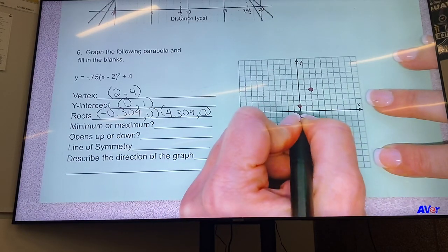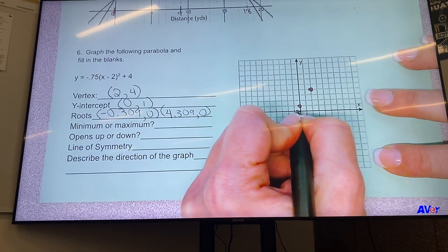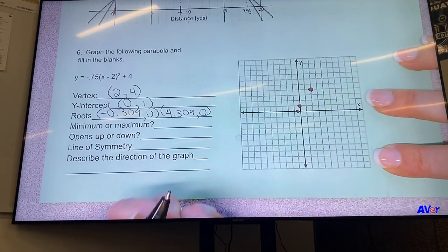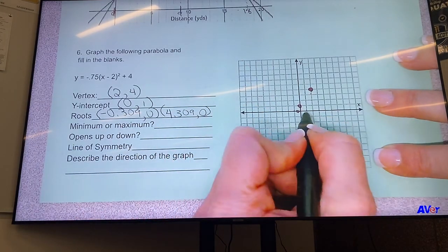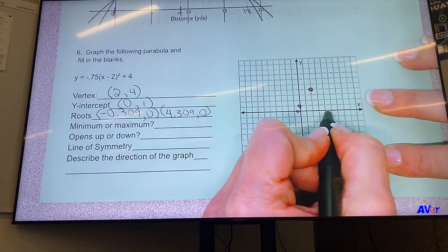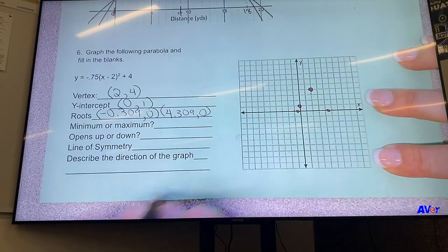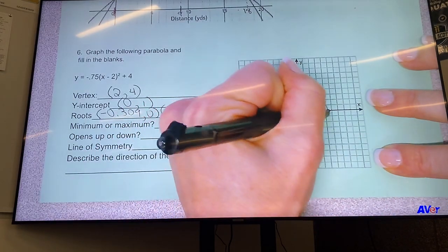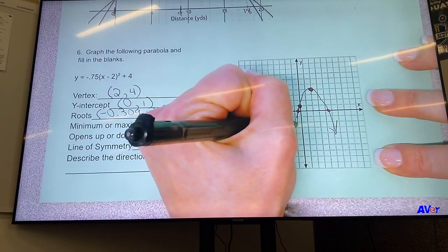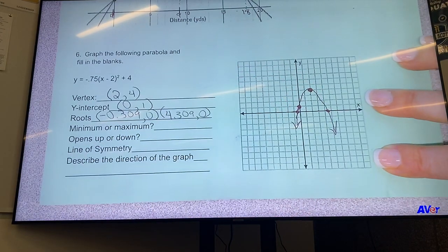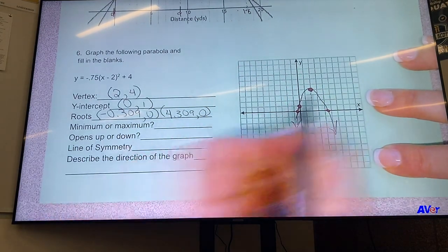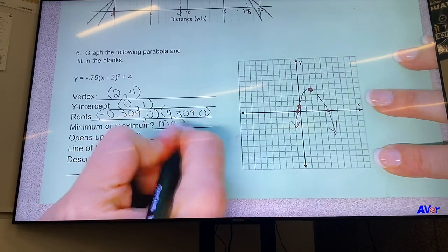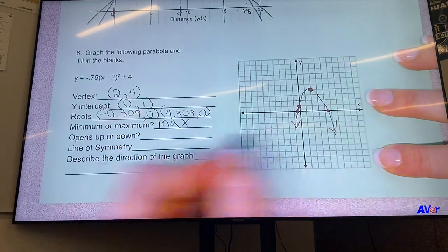And then at 1, 2, 3, 4.3, so a little beyond the 4. So this is kind of what our parabola looks like - crosses through all those points and then points down. Okay, so the vertex is a maximum, it opens down.